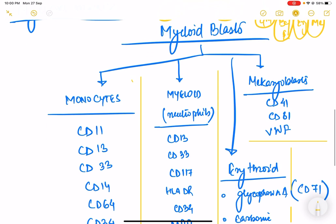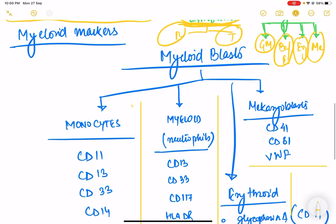Now, as far as myeloid markers are concerned, these are a bit complicated. What you can do is, like I told you, they can differentiate into megakaryoblast. They can differentiate into erythroblasts. First, they start with megakaryoblast. What are they going to be making? Platelets. So remember factor 11. We all know that platelets have factor 11. Basically, platelets are involved in the coagulation cascade. Factor 11 is involved in the coagulation cascade. So remember 41 and 61.